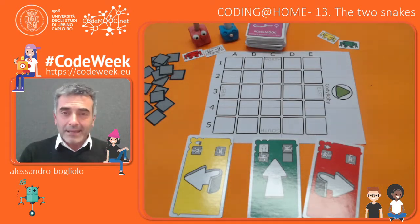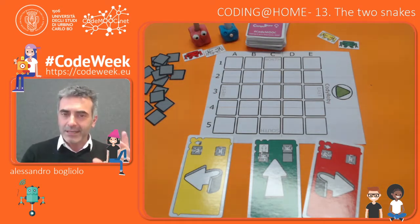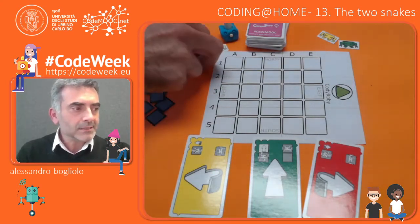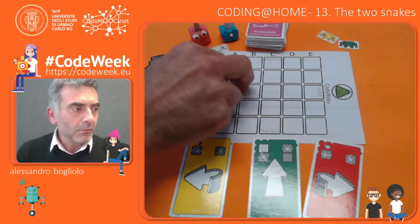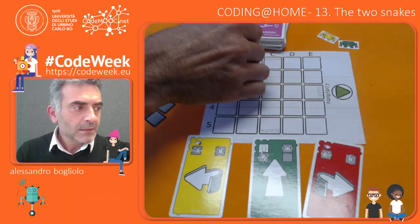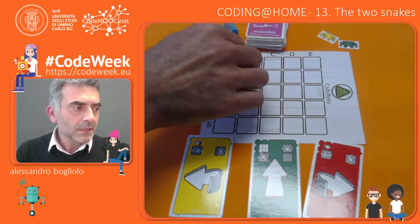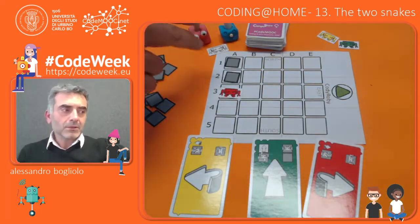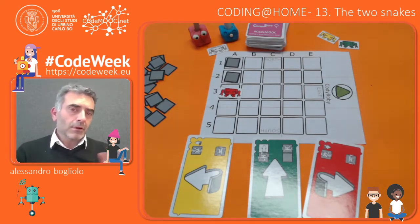What's a snake? A snake is made by a robot and each robot represents the head of a snake, the tail of which is made by the traces that the robot leaves while moving forward. So this means that every time the robot moves, he leaves a trace and the tail becomes longer.